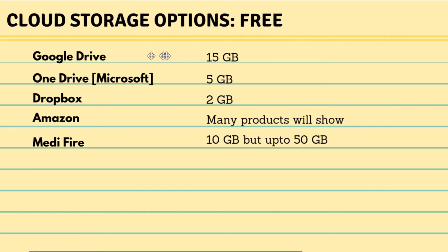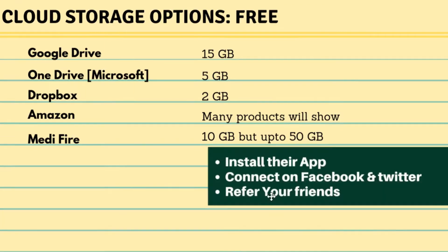With Google Drive, you can get 15 GB free. With Microsoft OneDrive, you get 5 GB. With Dropbox, you get 2 GB. With Amazon — I will show you the details in a minute because it's a little complex. And MediaFire is a company where you can get from 10 GB up to 50 GB. For 10 GB you don't have to do anything, but to get 50 GB you have to do certain things such as installing their app, connecting on Facebook and Twitter, or referring friends — and they will offer you up to 50 GB of free storage.